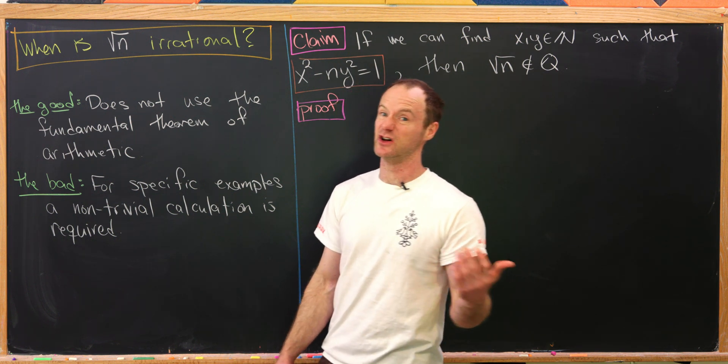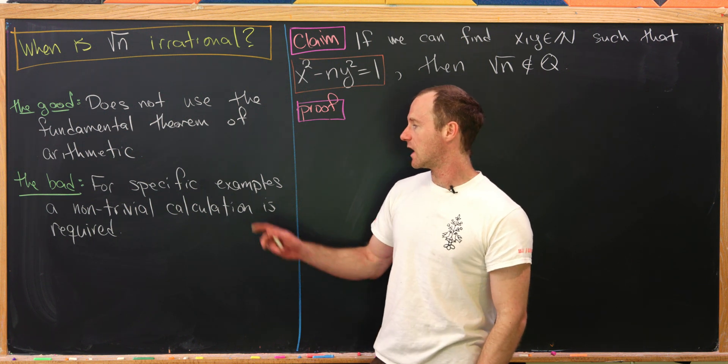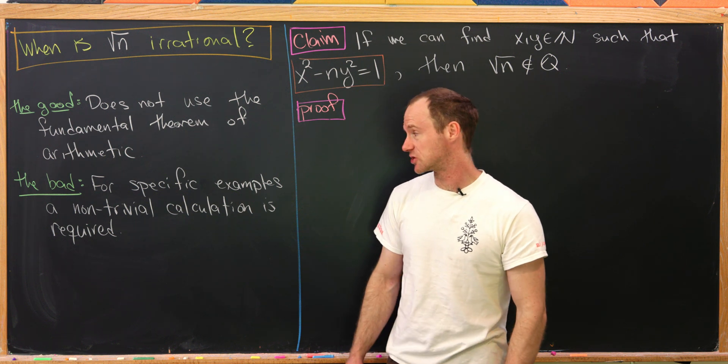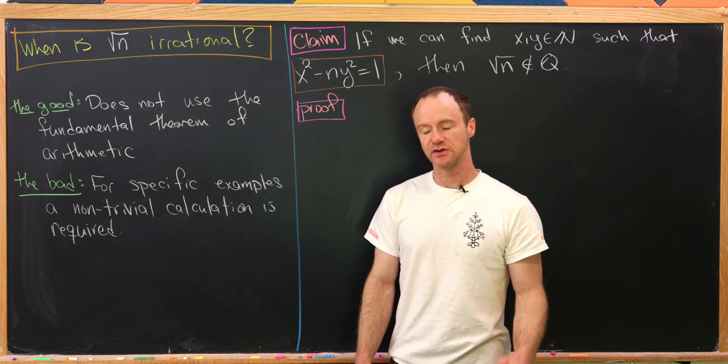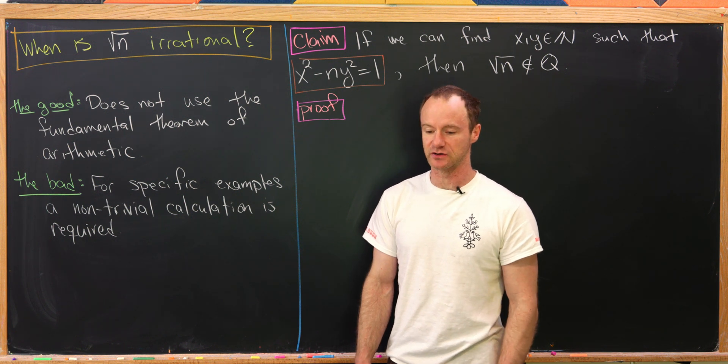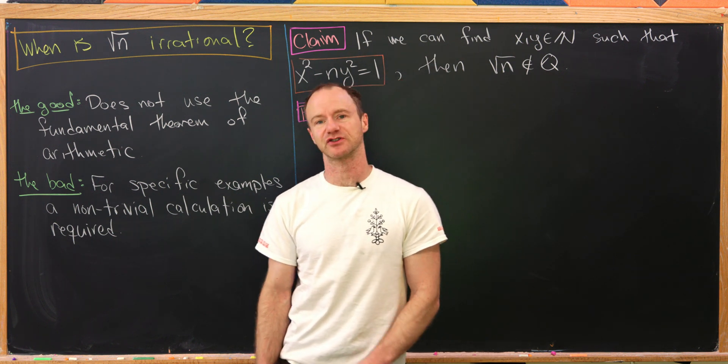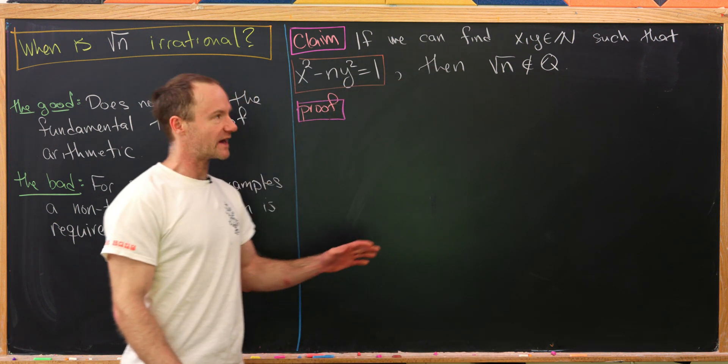That's definitely good, not having to use that theorem. But what's the bad thing? For specific examples, you have to do a non-trivial calculation. It will be obvious that the square root of 2 is irrational, but for instance, to show the square root of 13 is irrational becomes much more difficult.